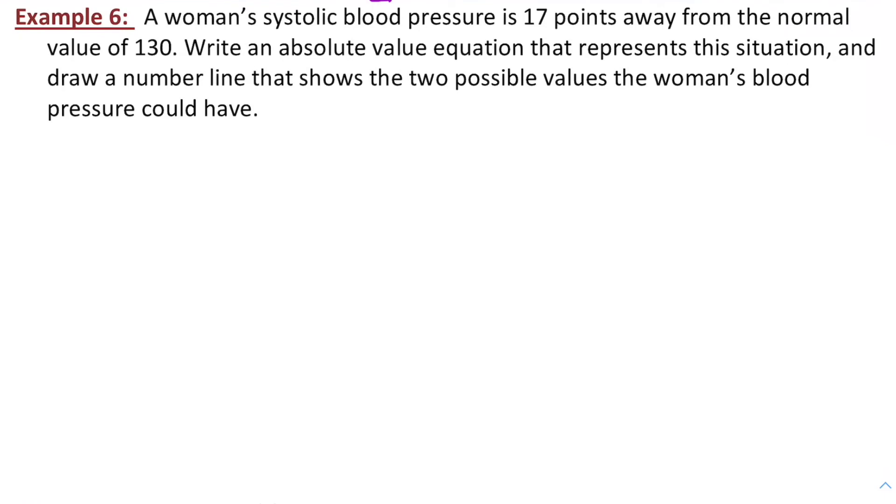Let's look at one more absolute value example. So a woman's blood pressure is 17 points away from the normal value of 130. We want an absolute value equation that represents this situation and the two possible values of her blood pressure. Well, her blood pressure could be 17 units too low or 17 units too high. So if it's too low, it'd be 113. If it's higher than normal, it'd be 147. So those are our two options for her systolic blood pressure if it's 17 units away from 130.